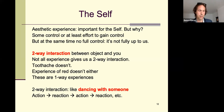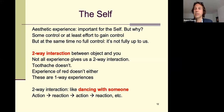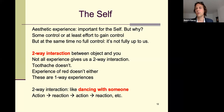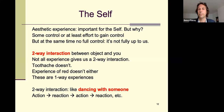I've been emphasizing the activity and control involved in aesthetic experience. But I should make clear: we do not have full control. It's not fully up to us. Remember the example of failed aesthetic experiences — we're really trying but it's not happening. Because of this, I think it's fair to describe aesthetic engagement as a two-way interaction between the object and the subject.